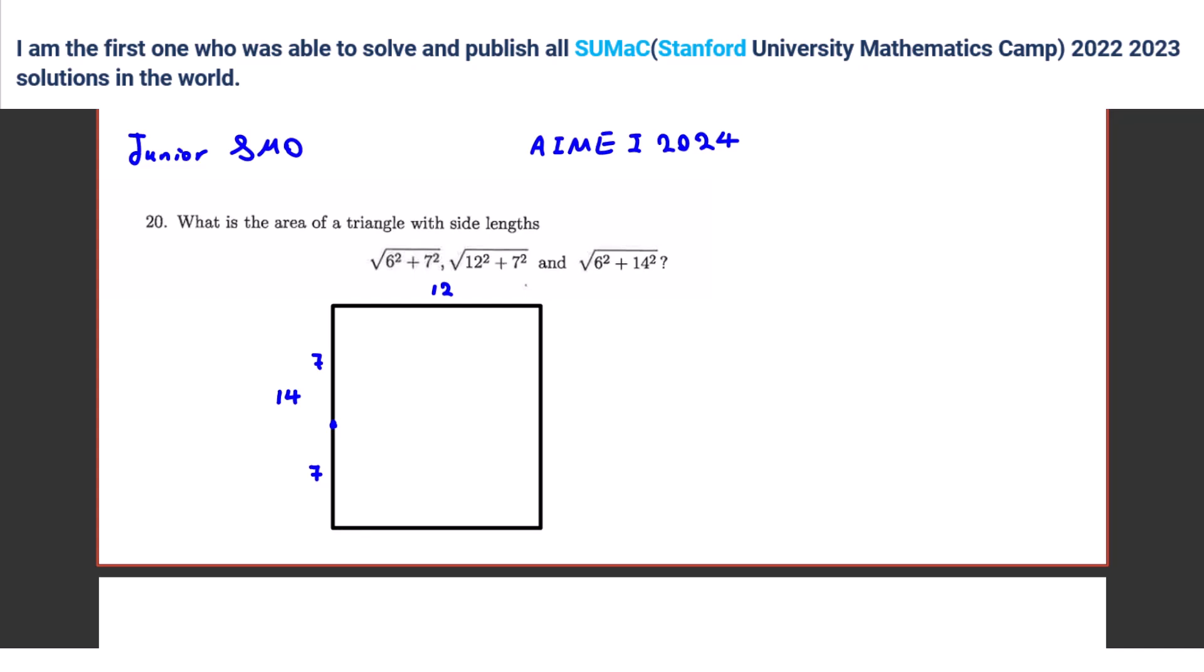Then we should do what, if we create this one, it's 12 plus 7 squared, 12 squared plus 7 squared, 7 squared plus 6 squared, 6 squared plus 14 squared, right? Yeah.